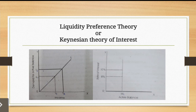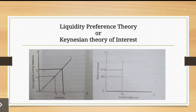In the first diagram, when income is OY1, the demand for active balance is OL1. When income rises to OY2, demand for active balance rises to OL2. This upward-rising curve shows that with an increase in income, the demand for active balance increases. The second diagram shows that the rate of interest does not affect the amount of active balance — you keep money for household and business needs regardless of the interest rate.